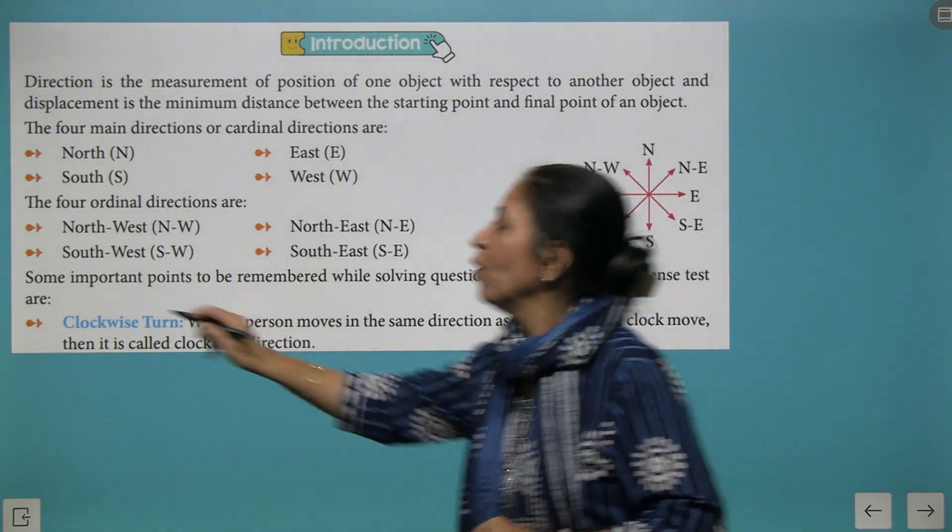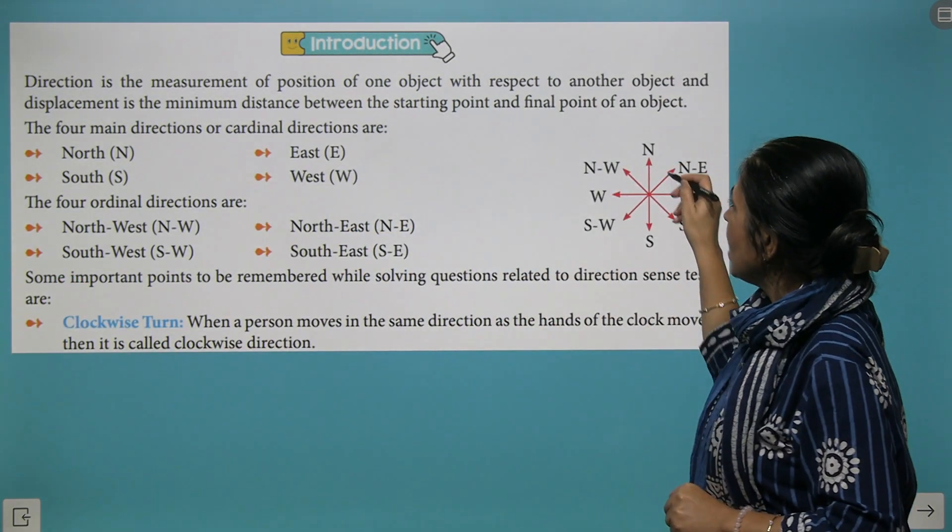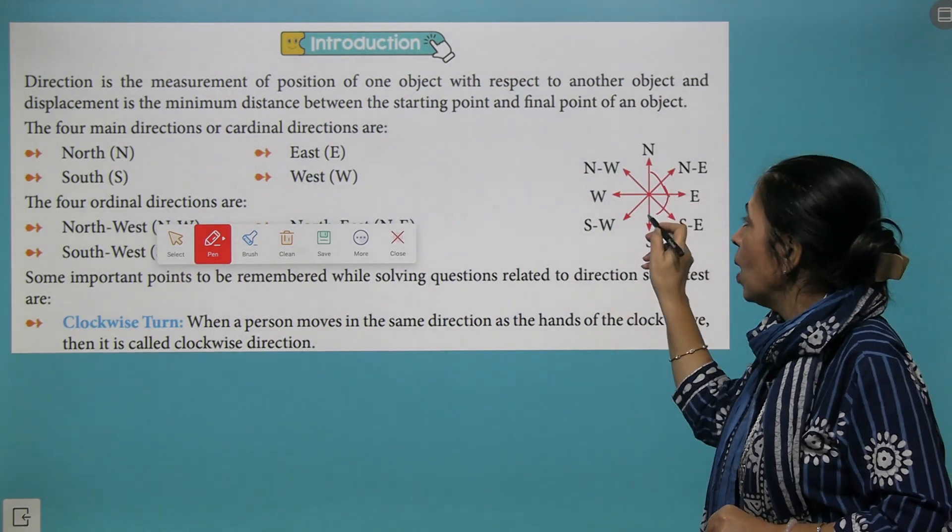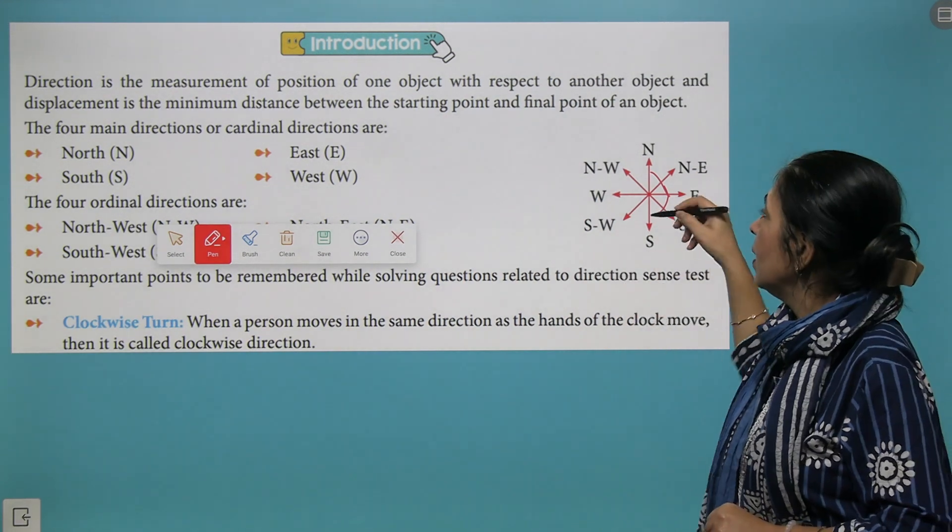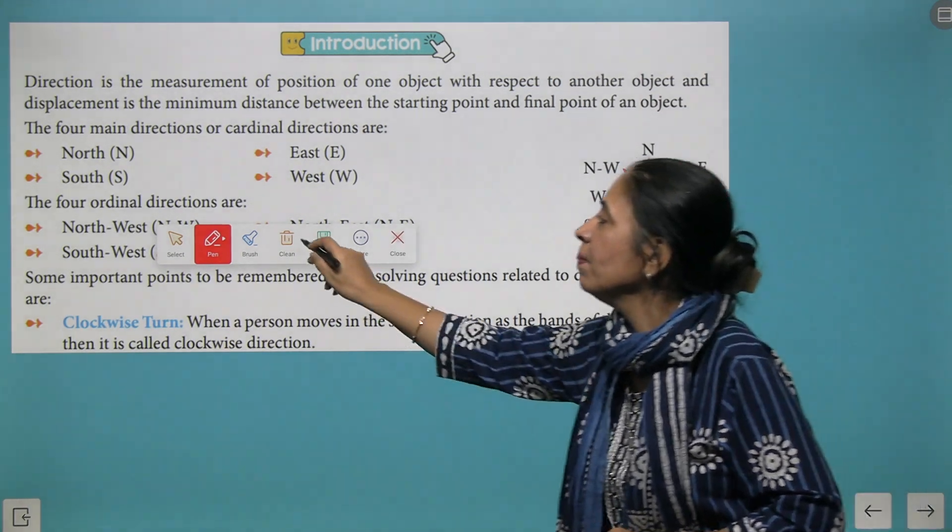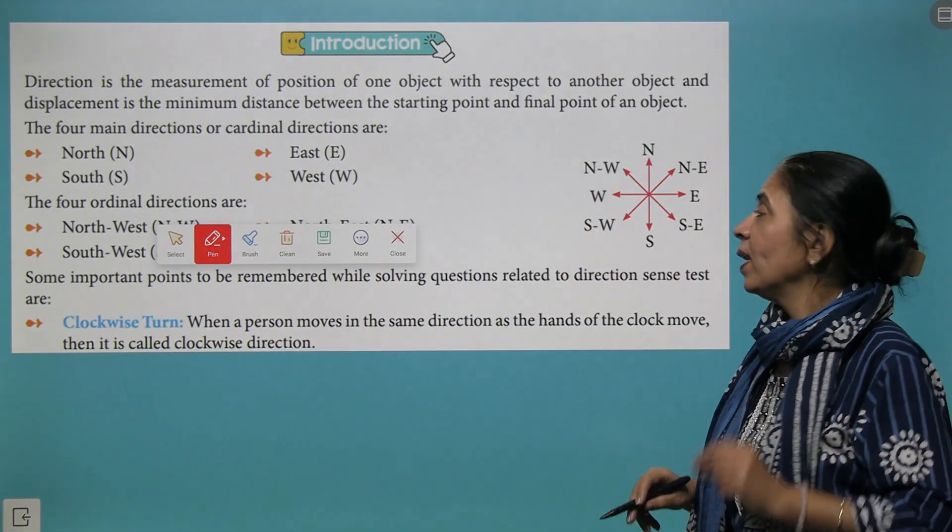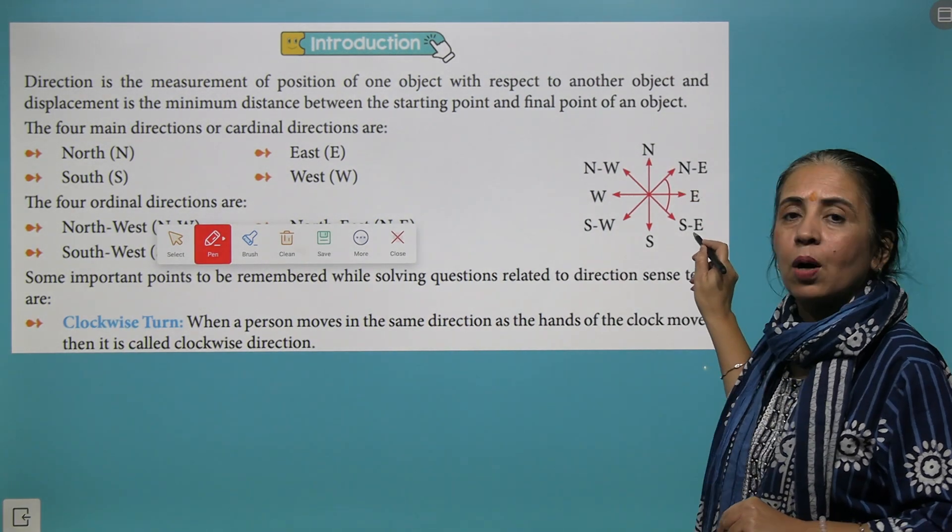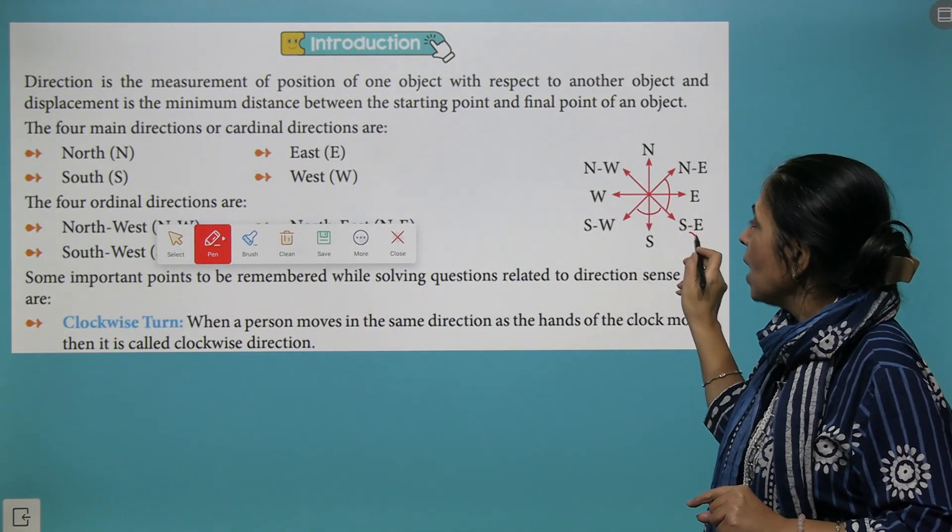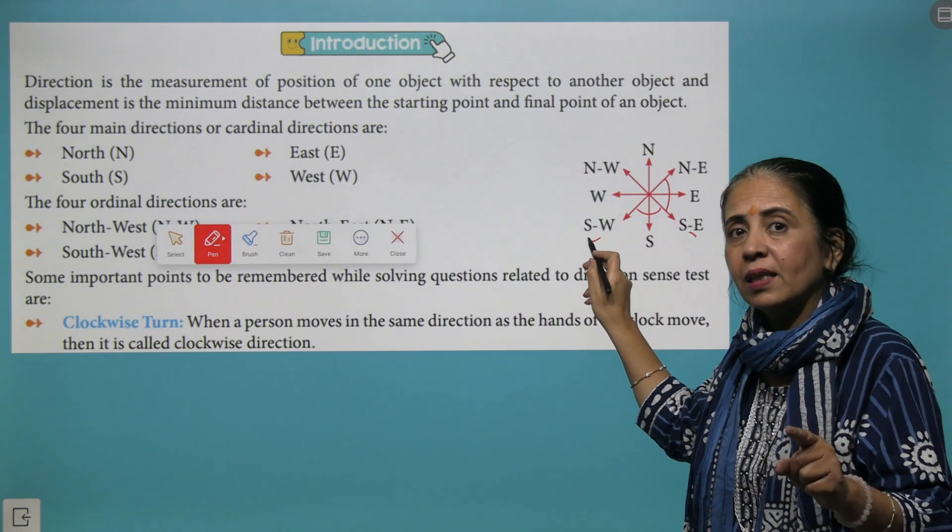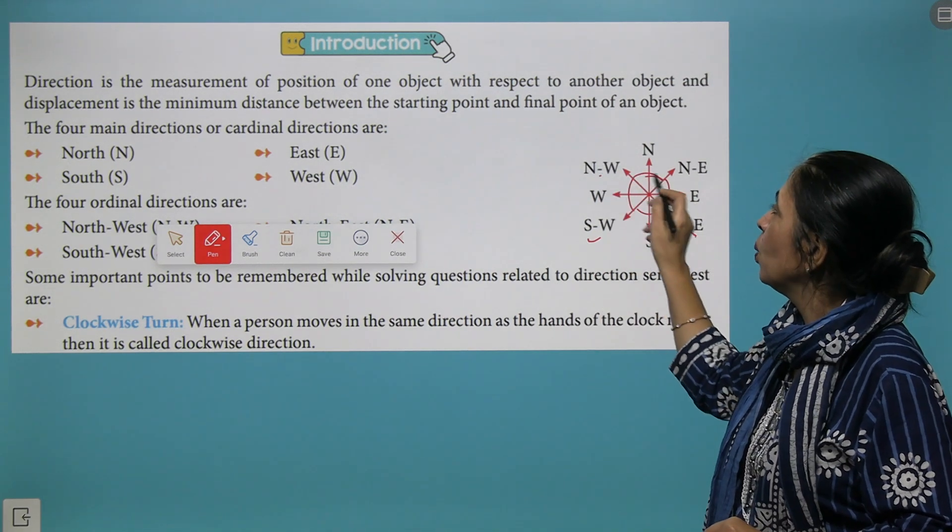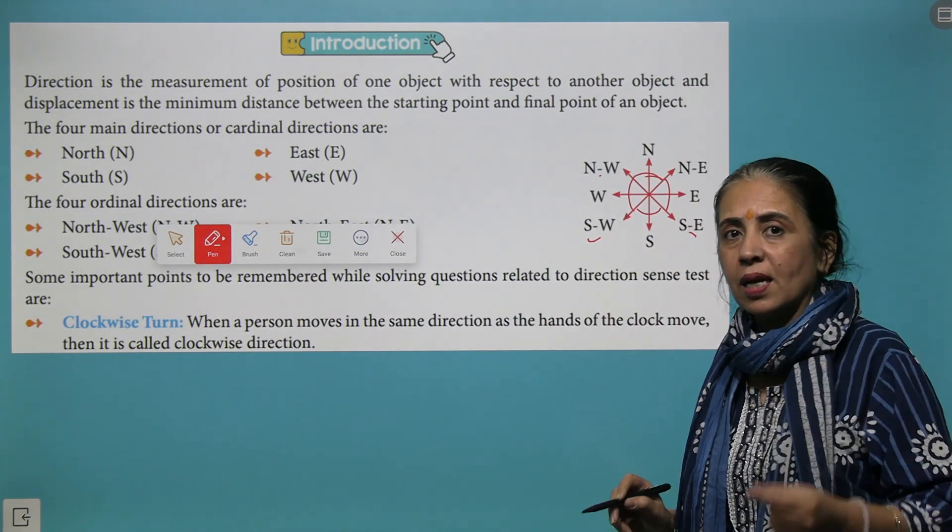Remember one very important thing: the distance between North and East is 90 degrees, East and South is 90 degrees. Similarly, South and West is 90 degrees, and West and North is 90 degrees. The same thing happens with ordinal angles. Northeast and Southeast are making a turn of 90 degrees clockwise. Similarly, Southeast and Southwest another 90 degrees, Southwest and Northwest another 90 degrees, and Northwest and Northeast is another 90 degrees.